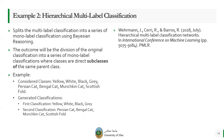Let's move to the second example. The second example deals with hierarchical multi-label classification. This method splits the multi-label classification into a series of mono-label classifications using Bayesian reasoning, but it can also use taxonomies and semantic resources. The outcome is the division of classification into a series of mono-label classifications that are easier to handle. Classes that are direct subclasses of the same parent class are put together. Let me clarify this through an example.